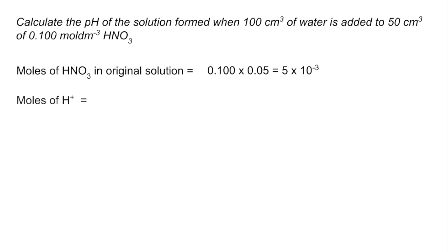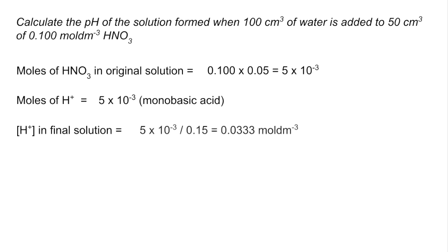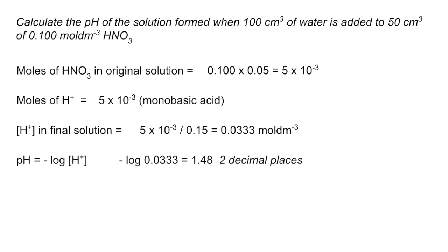Because nitric acid is monobasic, the moles of H+ is the same. But remember, pH requires the concentration of H+, so we divide moles by volume. The combined volume of the final solution is 150 cm³, giving an H+ concentration of 0.0333 mol dm⁻³. Taking the negative log gives a pH of 1.48 to two decimal places.